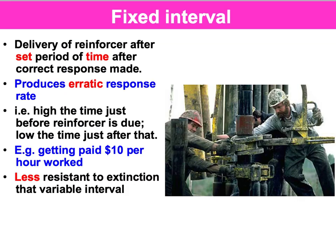If you've got a job and you're being paid per hour or per month, then you're being reinforced on a fixed interval schedule, which delivers the reinforcer after a set period of time after the desirable response has been made. And just like fixed ratio, it produces an erratic response rate. For instance, let's say a teacher offers some incentive for a class that can remain on task for a full hour. Your motivation is going to be really high if you've managed to be on task for 50 minutes, 55 minutes, approaching that hour. Then we get to the hour and we start again — so just after that hour, motivation dips and the response rate diminishes.